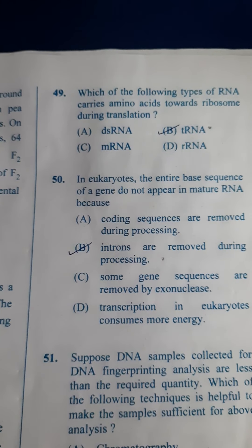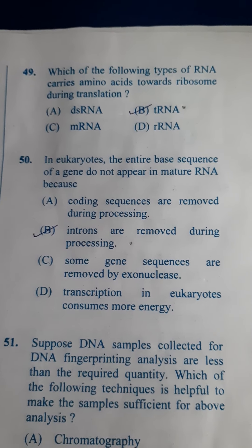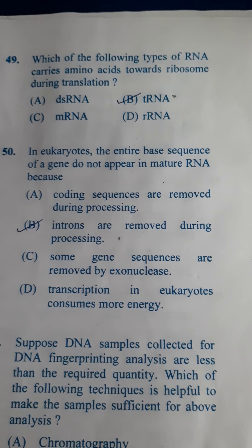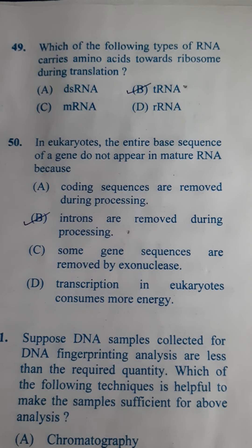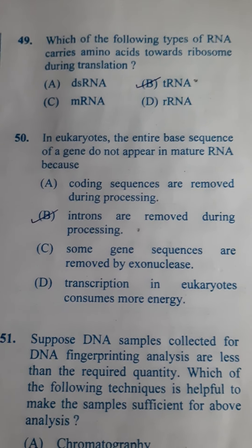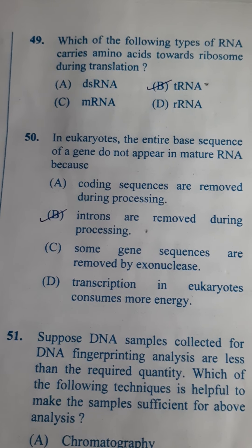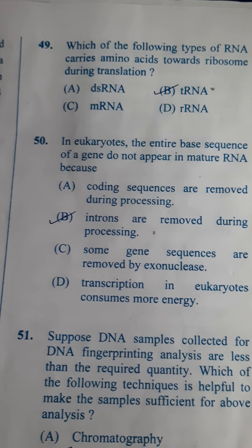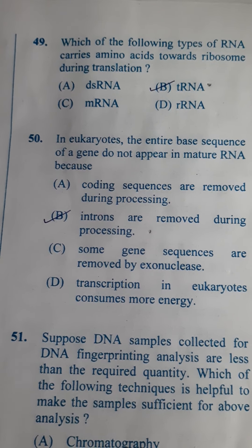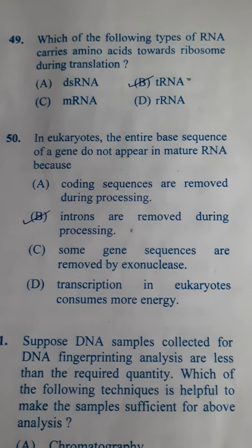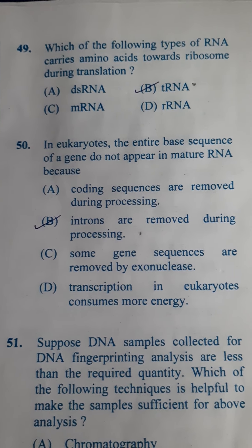Next one: Which of the following types of RNA carries amino acids towards the ribosome during translation? As per the name, tRNA is the RNA responsible for carrying amino acids to the protein synthesis site. That's the reason tRNA is called the adapter molecule. So for question 49 the answer is B — transfer RNA.